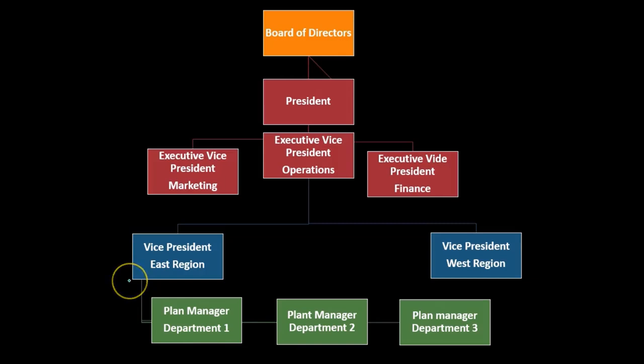The amount of controllable costs under the umbrella of the vice president will increase. So at the department level, there is more detail in the reports and the types of costs being controlled, but fewer total controllable costs. As we go up the line, there is less granular detail on types of costs, but a broader and larger amount of costs being managed overall.